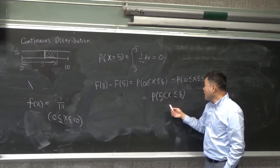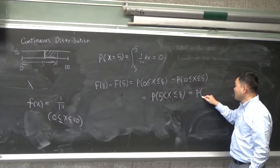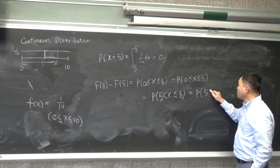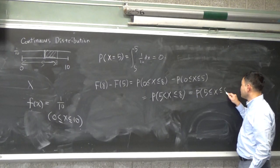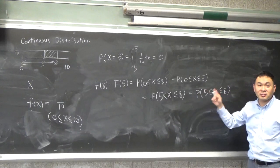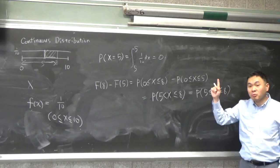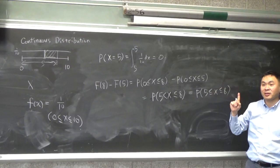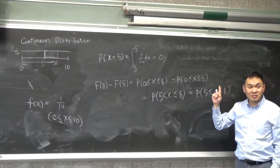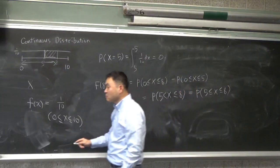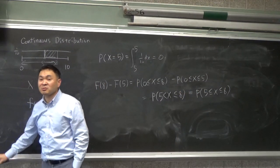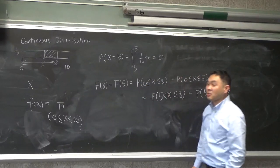But nonetheless, this has the same probability as if we include 5. Okay? And they're the same thing, because one point does not have any probability in continuous distribution. This is the major difference between a discrete one and a continuous one.